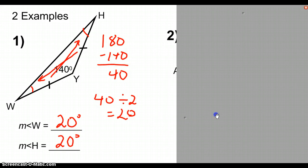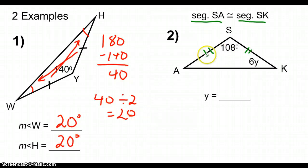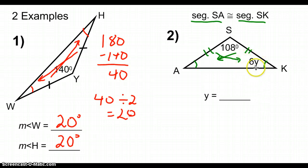Taking a look at our second example, we see triangle ASK, and we're told that segment SA and segment SK are congruent, so I'm going to mark that on the picture. Using the isosceles triangle theorem, because SA and SK are congruent, that means the angles across from them are congruent. So, angle A and angle K are congruent. Because angle K is represented by the expression 6Y, we can also represent angle A with the same expression, 6Y.